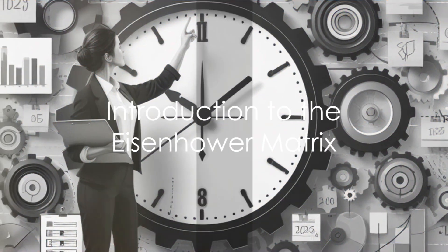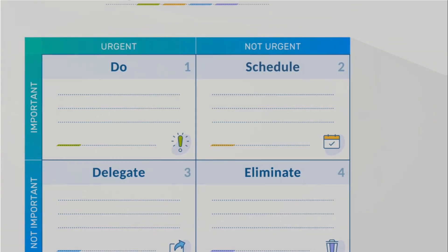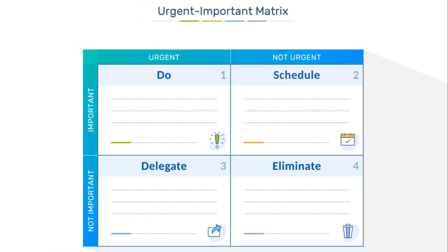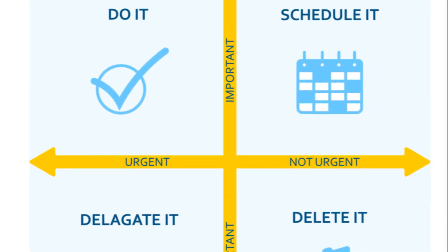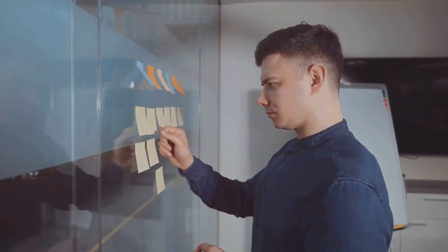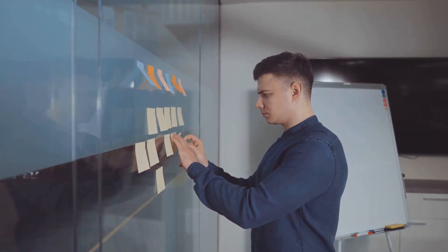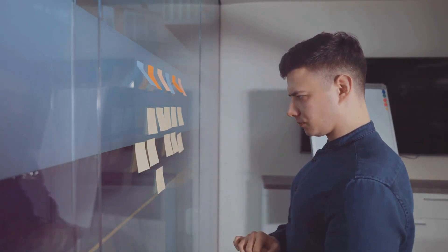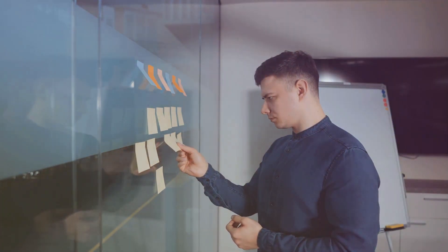Have you ever wondered how successful real estate professionals manage their time effectively? The answer may lie in a simple yet powerful tool known as the Eisenhower Matrix. The Eisenhower Matrix, named after the 34th President of the United States, Dwight D. Eisenhower, is a time management tool that helps prioritize tasks based on their urgency and importance.